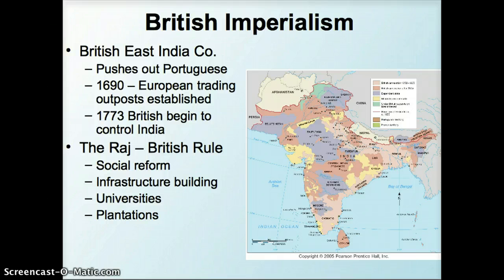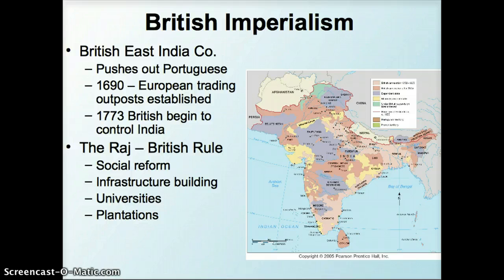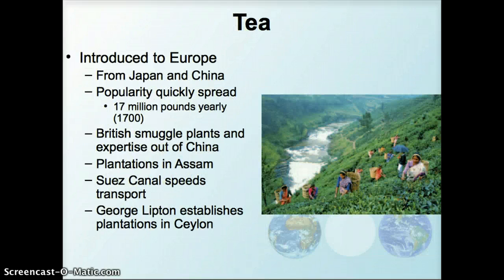This period of time is called the Raj. Within that you had a lot of different things that happened. The area that we think of today as India, Pakistan, and Bangladesh has a lot of different ethnic groups and small kingdoms that were united under British rule. There was a lot of social reforms that took place, building of infrastructure, institution of British cultural things like the university, English as a major language, and the switch of local agriculture to plantations for export, like we've seen in other parts of the world.